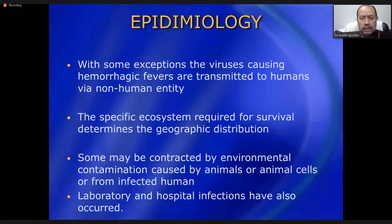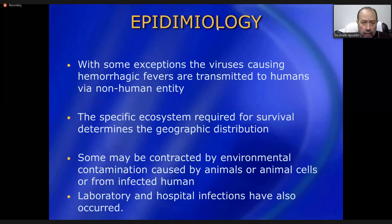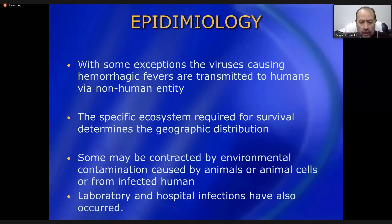Some infections may be contracted through environmental contamination caused by animals or from infected humans. Zoonotic diseases are those that occur in animals but can also be transmitted to human beings. So both zoonotic transmission — from animals to humans — and human-to-human transmission are possible routes for these viral hemorrhagic fevers.